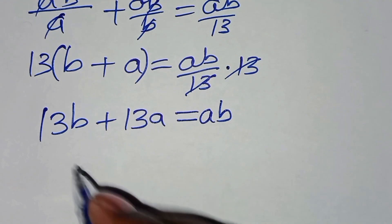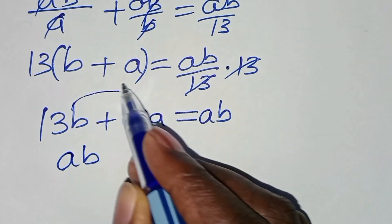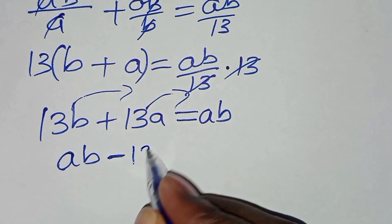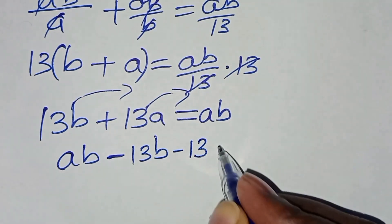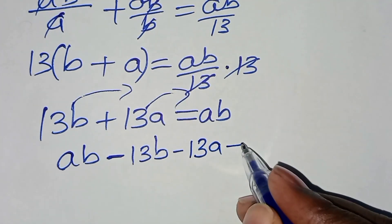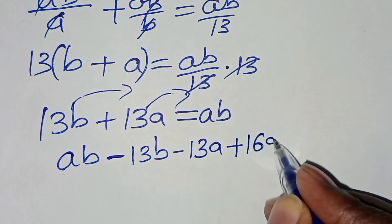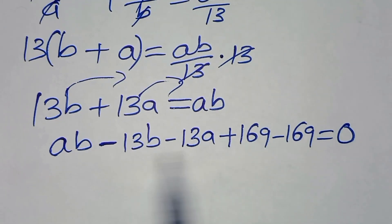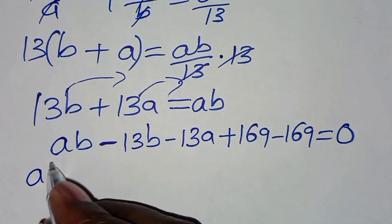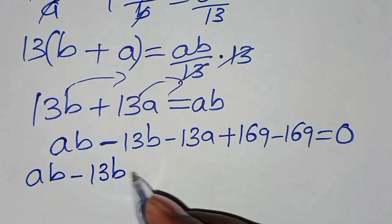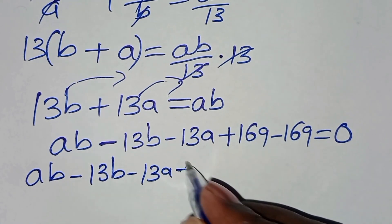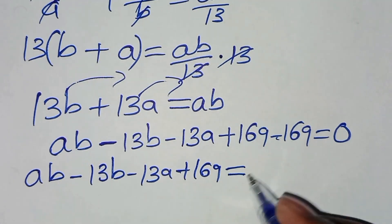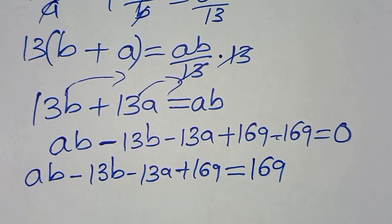Now we can rewrite this as AB minus 13B minus 13A. Let's add and subtract 169, so AB minus 13B minus 13A plus 169, and this equals 0. We take the negative 169 to the right-hand side, making it positive 169.